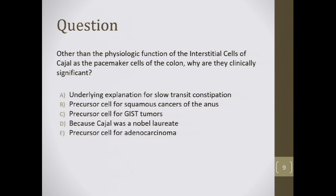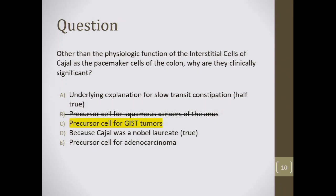Review question: Other than their physiologic function as pacemaker cells of the colon, why are the interstitial cells of Cajal clinically significant? Options: A) underlying explanation for slow transit constipation; B) precursor cell for squamous cancers of the anus; C) precursor cells for GIST tumors; D) because Cajal was a Nobel laureate; E) precursor cell for adenocarcinoma. The correct answer is C — they are precursor cells for GIST tumors. Cajal was indeed a Nobel laureate, but that's not the best answer, and slow transit constipation is partially true but not the best answer.